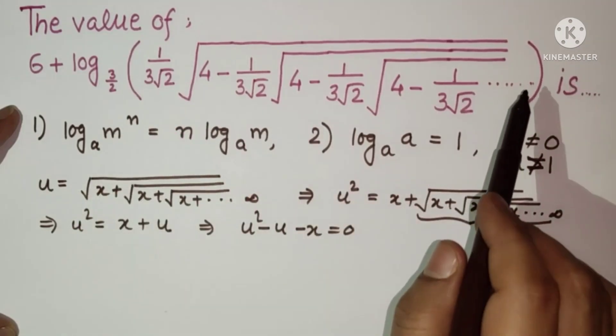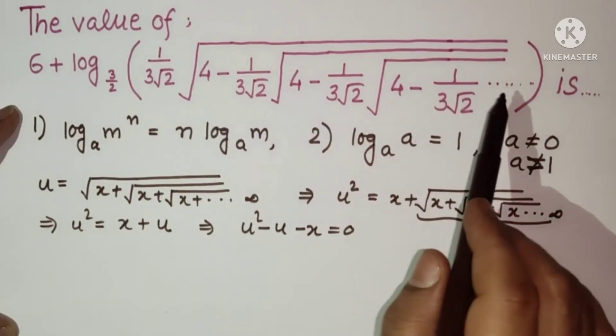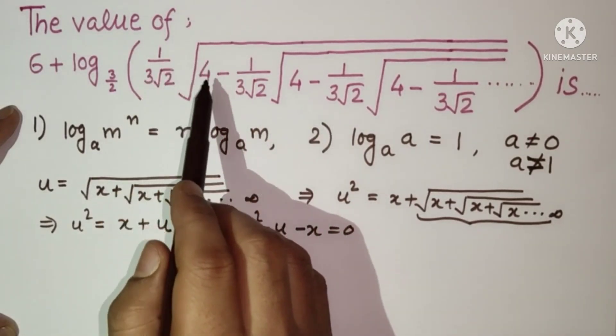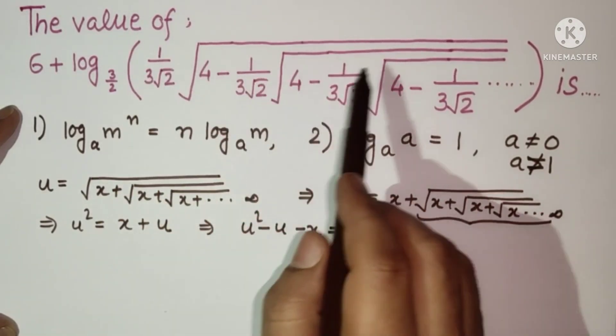So similarly for this question we can assume the whole thing as y or only this thing as y. So 1 upon 3 root 2 under root 4 minus this under root 4 minus this under root.